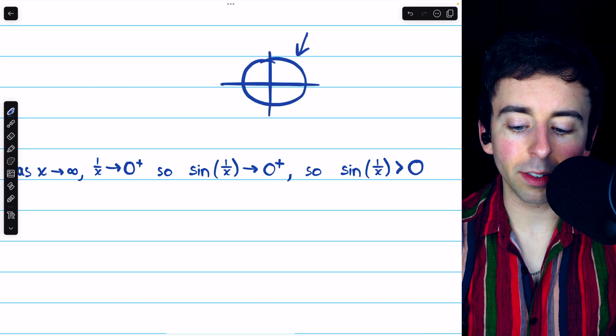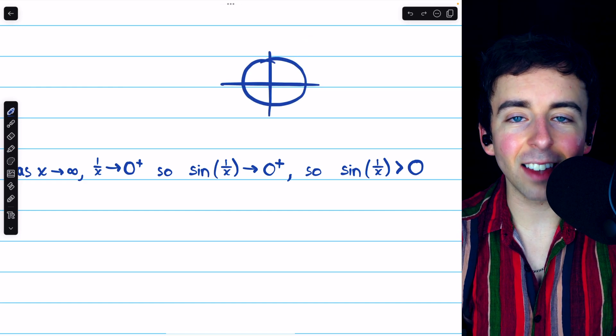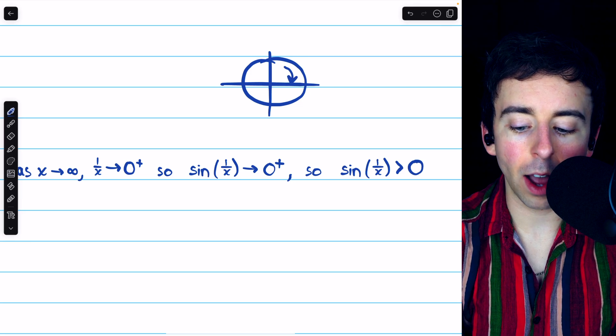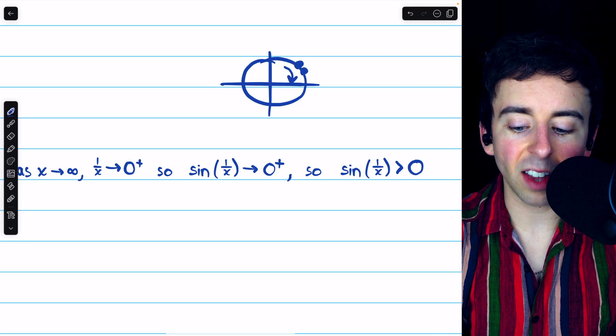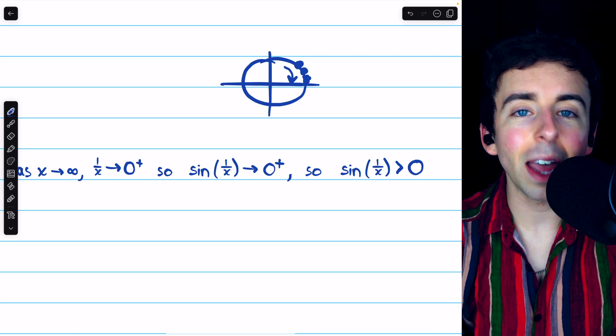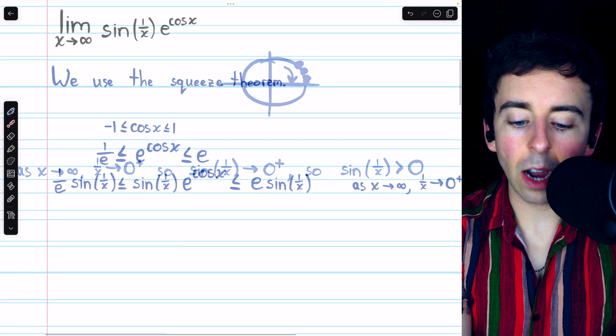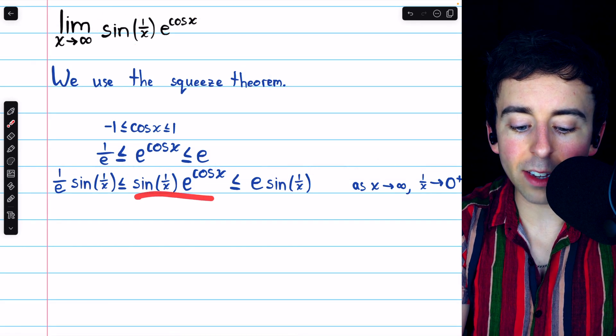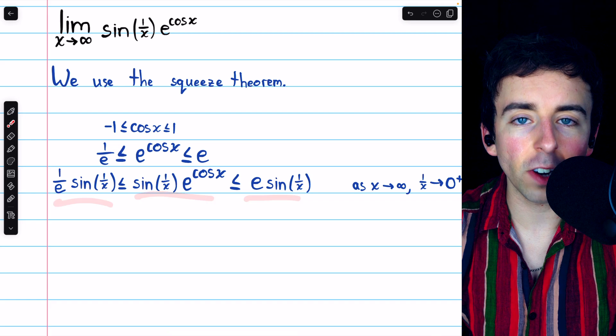If we think about the unit circle, the angle inside of the sine function is approaching 0 from the positive direction. So, all of our sine values, which are the y-coordinates of these points, those are all going to be positive as they approach 0. Now, we have the expression whose limit we're trying to evaluate squeezed between these two functions.